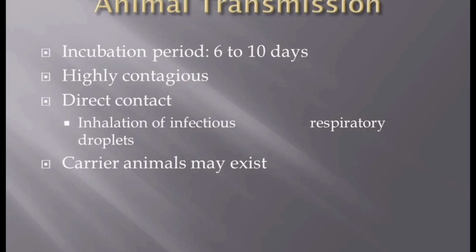Contagious Caprine Pleuropneumonia is highly contagious. Transmission of this disease is by direct contact through the inhalation of infectious respiratory droplets. Chronic carriers may exist, but this remains unproven.